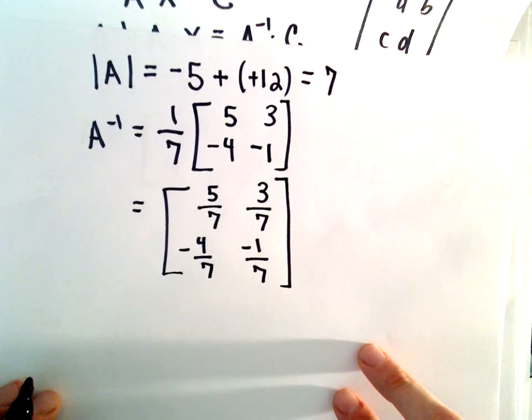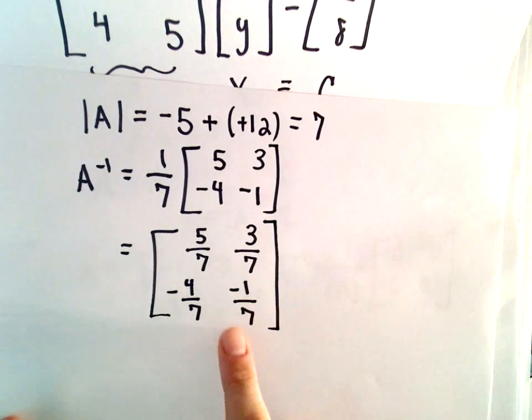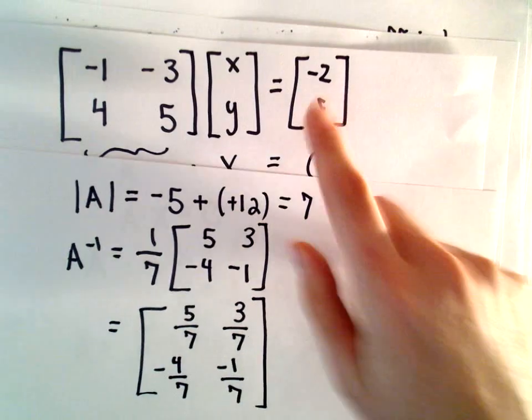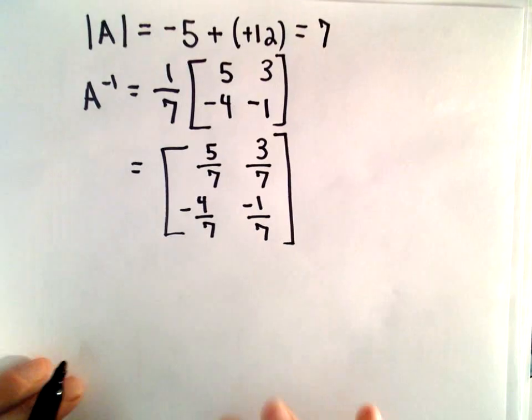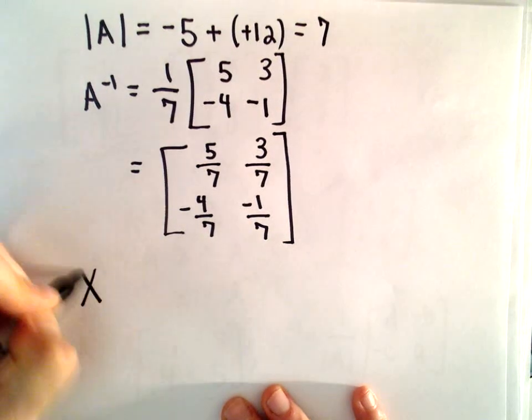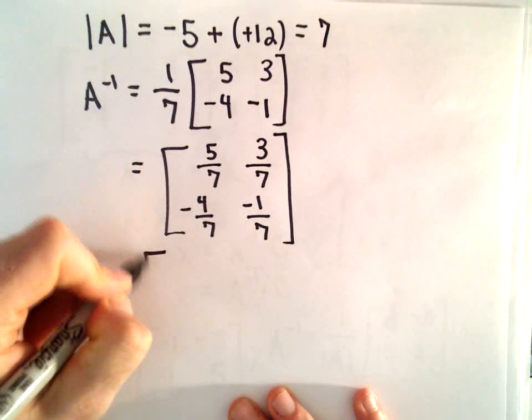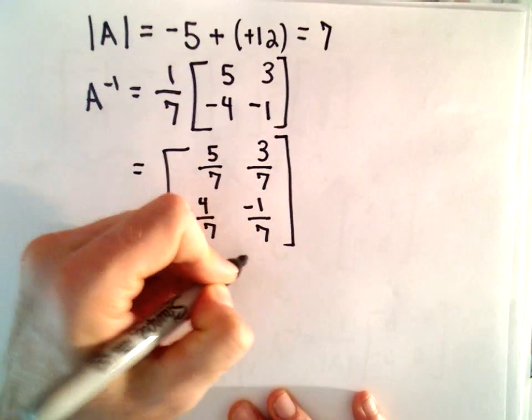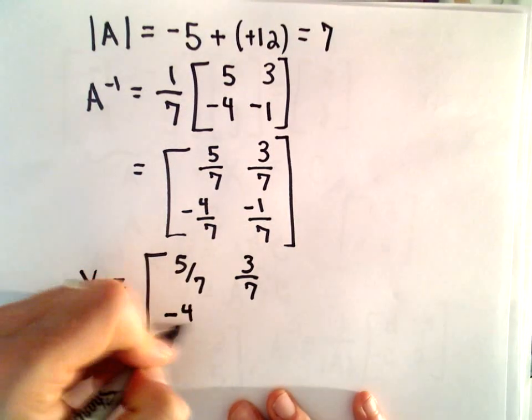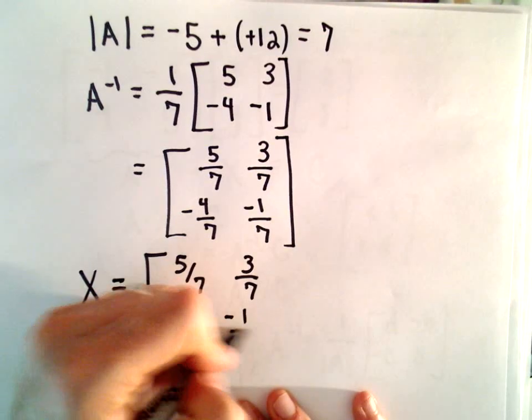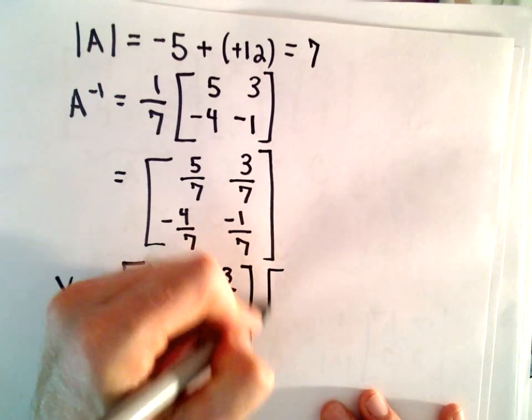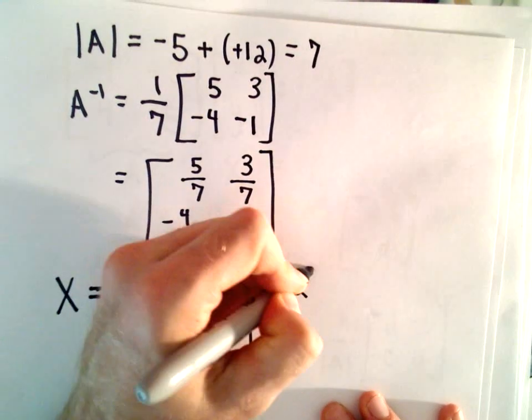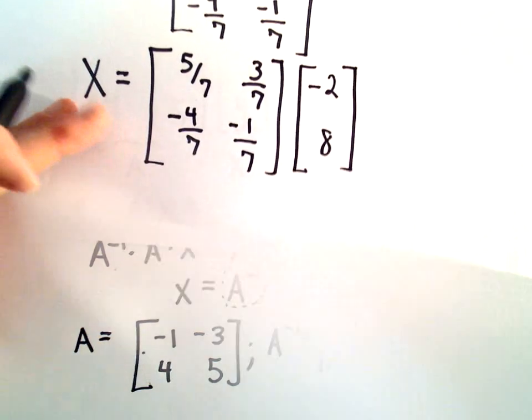So the last thing we have to do now is to multiply our inverse matrix by the matrix containing entries negative 2 and 8, and that's going to be our solution. So our solution, we'll take the inverse: 5 over 7, 3 over 7, negative 4 over 7, negative 1 over 7, and multiply that by negative 2 and 8.